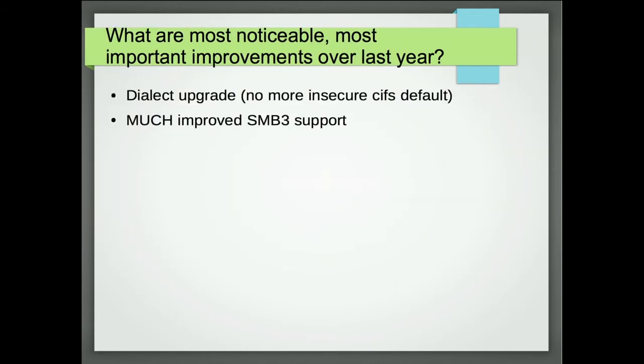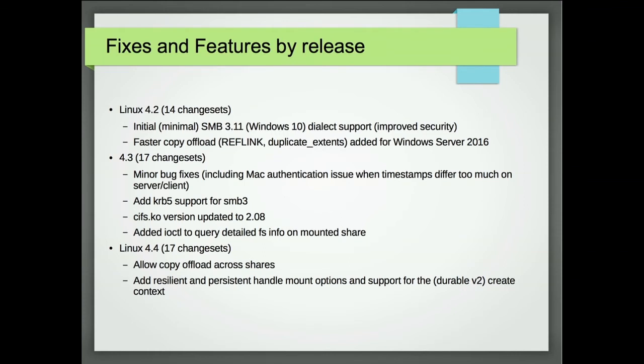We got most of last year's list done. The most noticeable change: the dialect upgrade. You're going to mount and not get CIFS. Yes, a few things will be worse because you don't have POSIX extensions, but many things are better now. SMB3 support is much improved, much more secure, and for read and write paths, much faster. Pavel and others have done great performance improvements — the SMB3 performance is quite good for read and write.